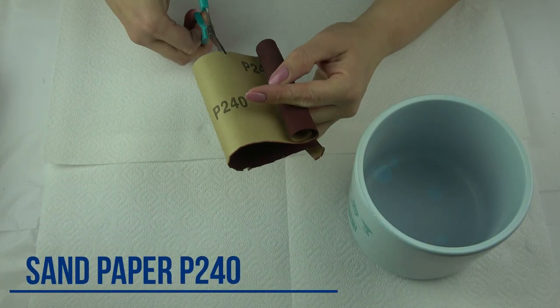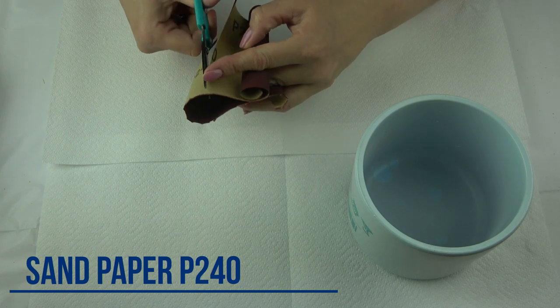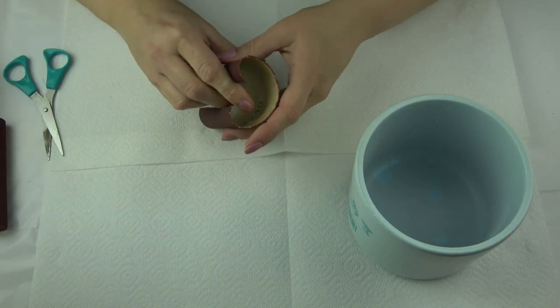Let's start from sanding the surface of my pot mat so paint can stick to it better.